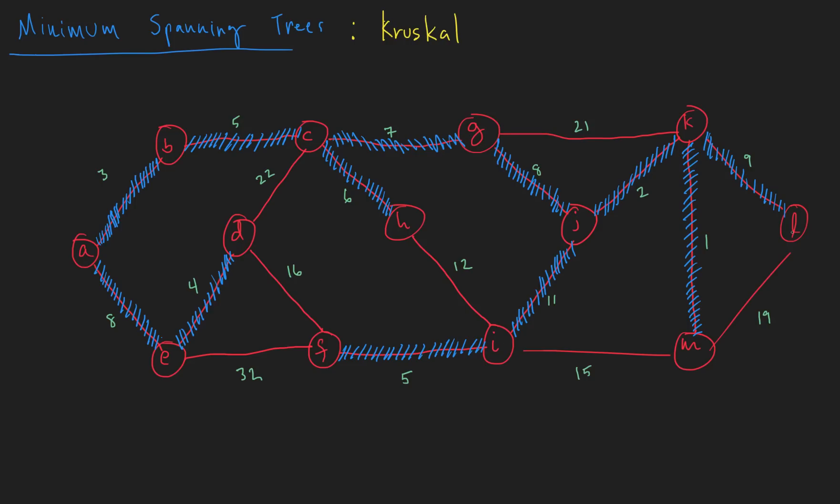Seventeen, eighteen, nineteen. Nope, we can't do that. There's a cycle there. There would be a cycle there. Twenty, twenty-one. Again, a cycle. No good. Same thing with twenty-two. There'd be a cycle here. Looks like thirty-two is the next one. And again, we'd have a cycle.